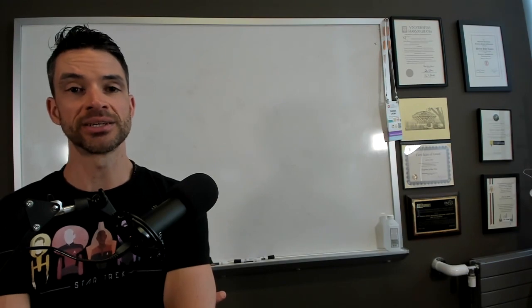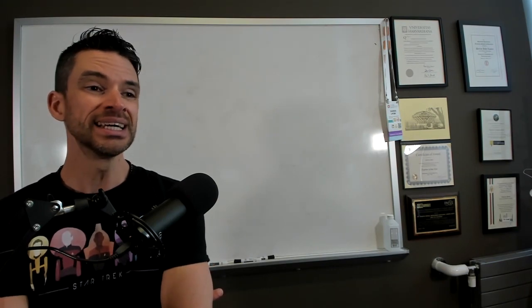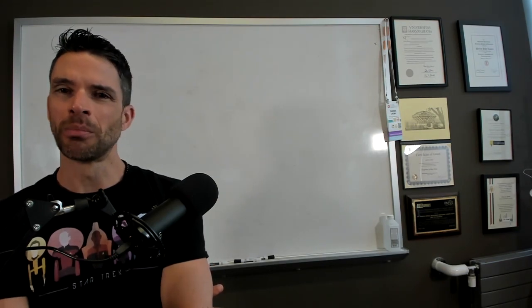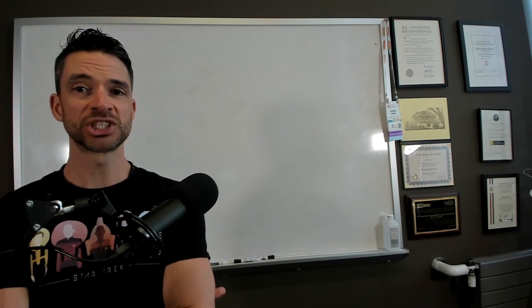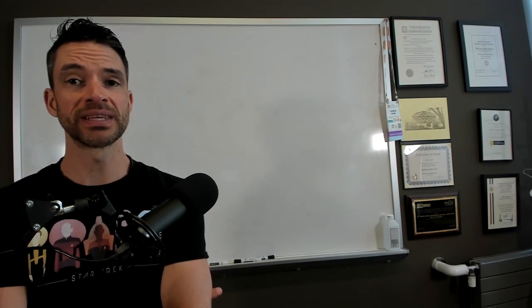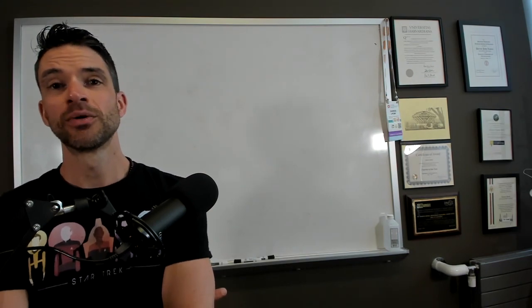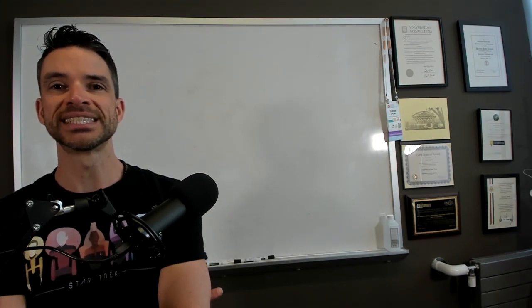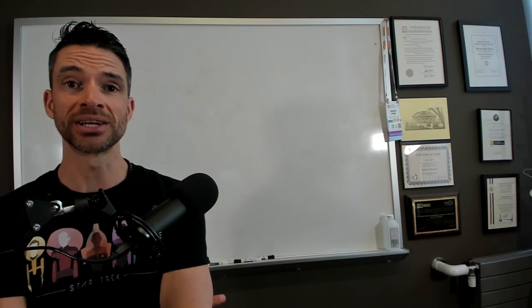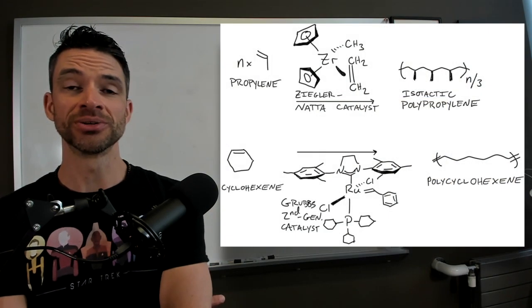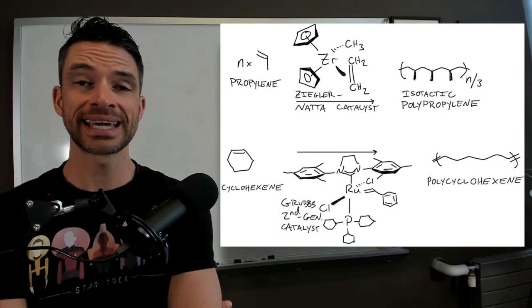Homogeneous catalysis means that your catalyst is usually some kind of small molecule or transition metal cluster or something that you put into the reaction mixture, and because it's what's called a coordination sphere of ligands around the metal, say here I've shown the Ziegler-Natta catalyst,